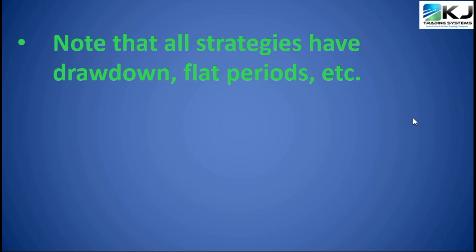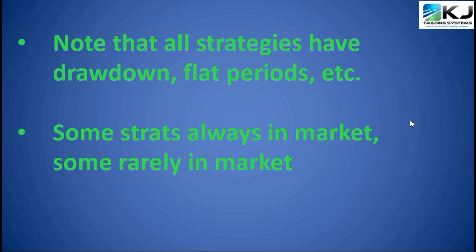When you look at those as a whole, there are a couple things you should probably notice. One, all these strategies have drawdowns, flat periods, and periods where they don't do so well. They are not straight-line equity curves, because those are, frankly, a fantasy for the most part. Almost all algo strategies are going to have drawdowns — sometimes significant. You saw at least one system that had a huge drawdown during the start of COVID in 2020. Some of these seem to be in the market all the time, while others are flat for long periods — they wait for an opportunity and then jump in. Others are either long or short pretty much all the time, so there's a mix of different strategies in there.